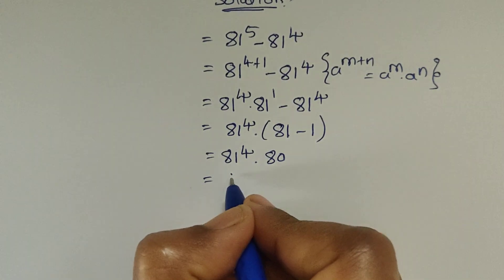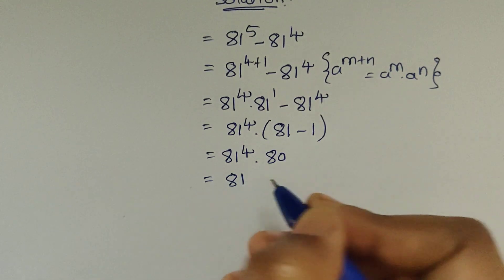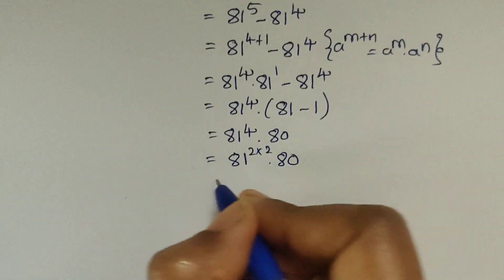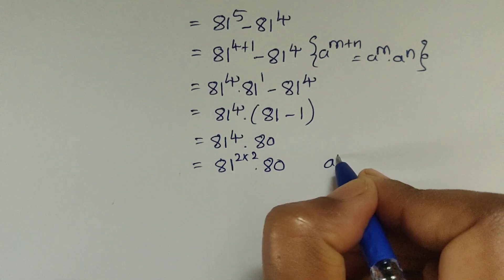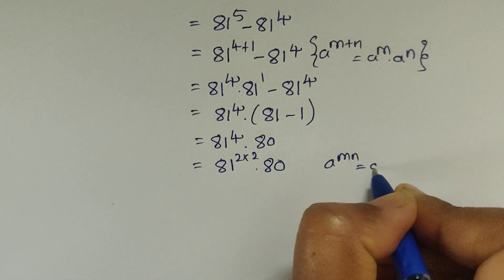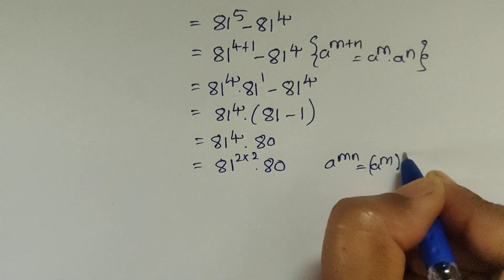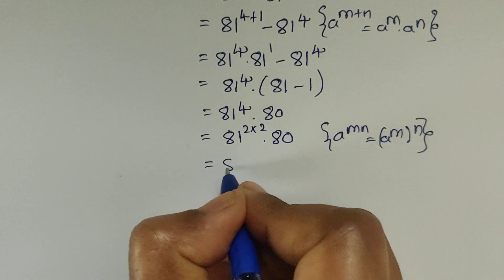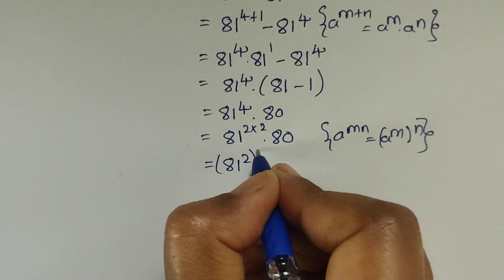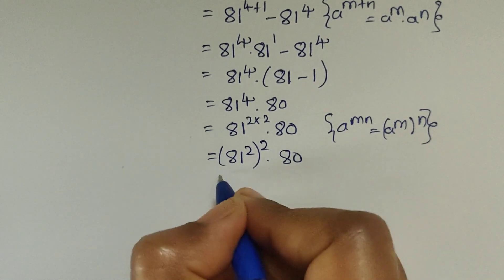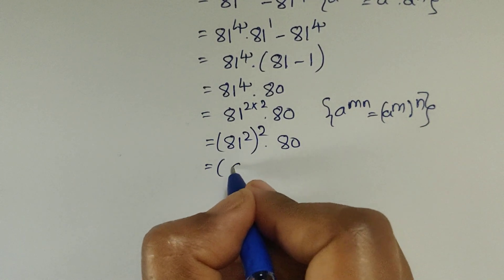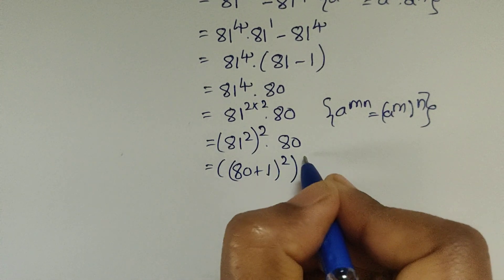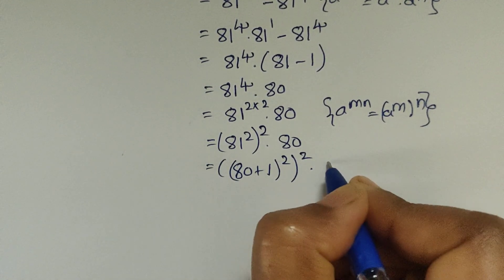So here 81 to the power of 4 — we can write this using the formula a to the power of m times n equals (a to the power of m) whole to the power of n. So 81 to the power of 4 equals (81 to the power of 2) whole to the power of 2. Then we have (80 plus 1) whole square, whole to the power of 2, times 80.